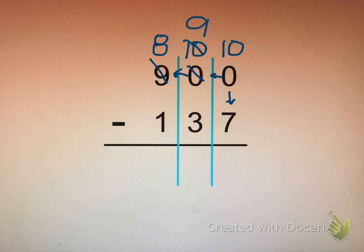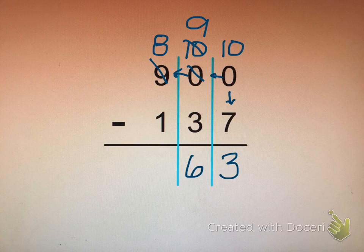I think we're ready to subtract now. My ones place now has ten and ten take away seven is three. In my tens place I've got nine. Take away the three leaves me with six. In the hundreds place has eight. Take away one which leaves me with seven. So our answer is 763.